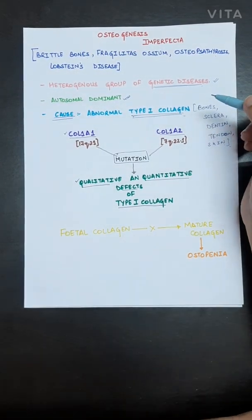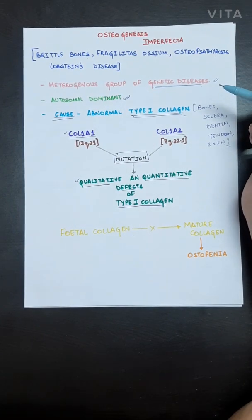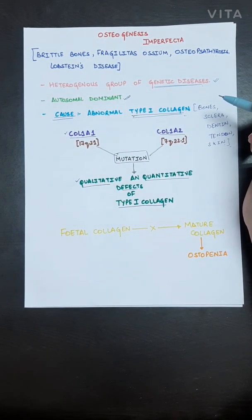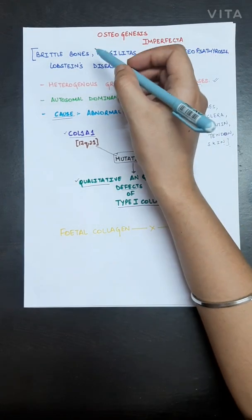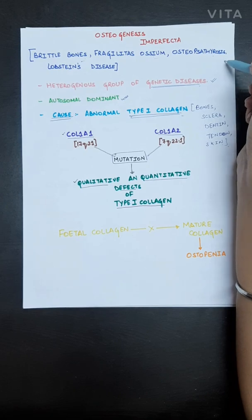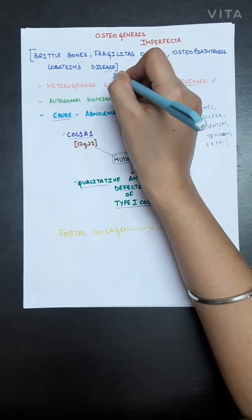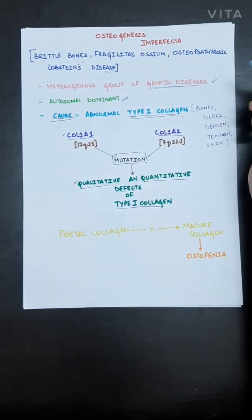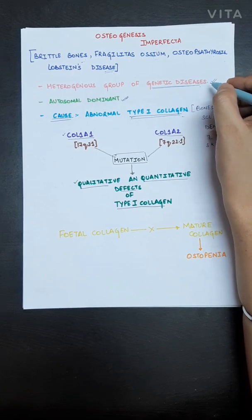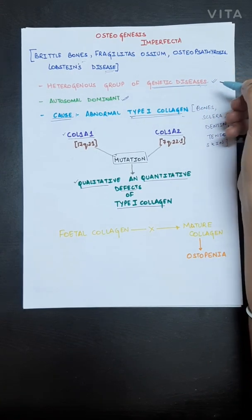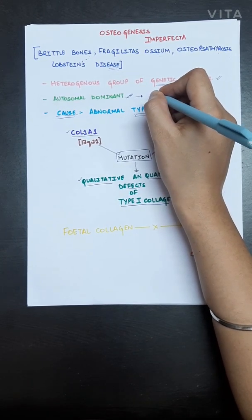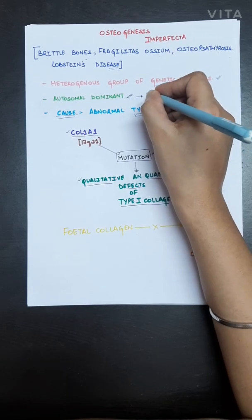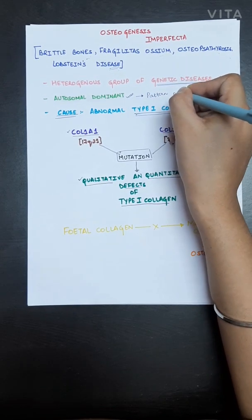Today we are going to discuss osteogenesis imperfecta, a bone and joint disease. It is also known as brittle bones, fragilitas ossium, and lobster's disease. It is basically a heterogeneous group of genetic diseases, and the mode of inheritance is autosomal dominant.